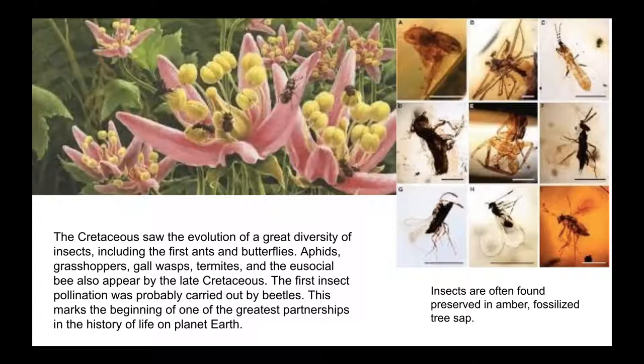The first insect pollination was probably carried out by beetles, and this pollination and nectar gathering marked the beginning of one of the greatest partnerships in the history of life on planet Earth — super important because it benefits both the plant and the insects. Now, insects, because they're small and don't have a bony skeleton, have a somewhat spotty fossil record, but when they're tiny they can be preserved in amber, which is fossilized tree sap.